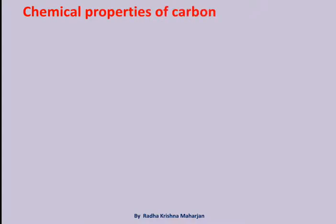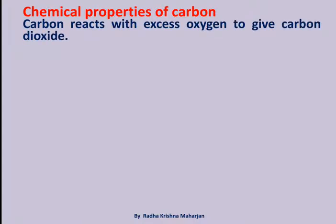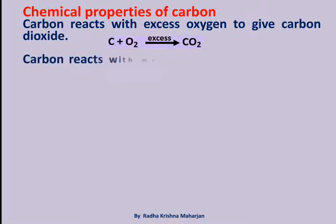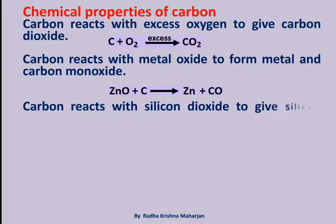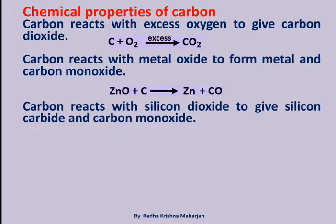Chemical properties of carbon: Carbon reacts with excess oxygen to give carbon dioxide: C + O₂ (excess) → CO₂. Carbon reacts with metal oxide to form metal and carbon monoxide: ZnO + C → Zn + CO. Carbon reacts with silicon dioxide to give silicon carbide and carbon monoxide: 3C + SiO₂ → SiC + 2CO.